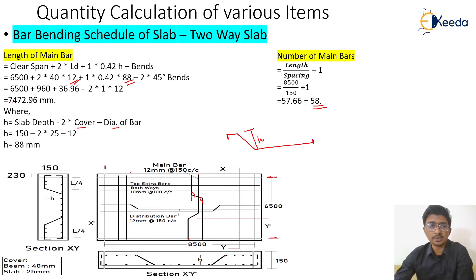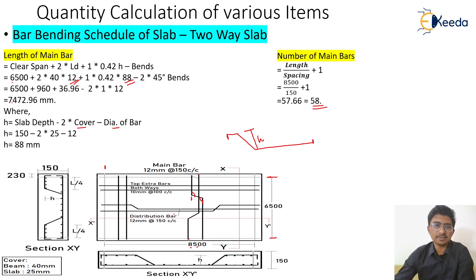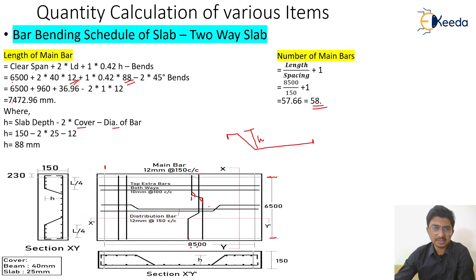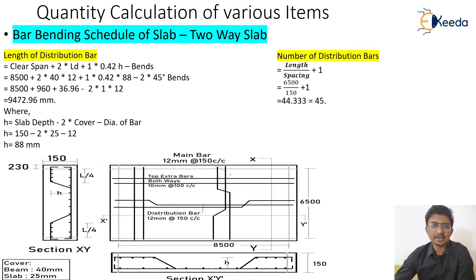For the distribution bars, there is no major difference in calculating the length. The only change is that distribution bars serve the shorter span, so the clear span of 6500 is used for counting the number of bars, while the length of 8500 is used for the bar length. The same formula applies: clear span plus two times development length plus 0.42h minus bend deductions. Here the clear span for the distribution bar length is 8500.